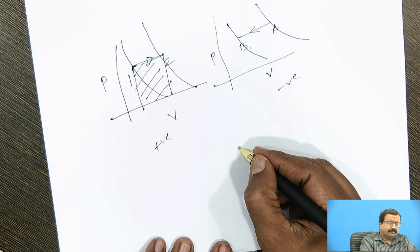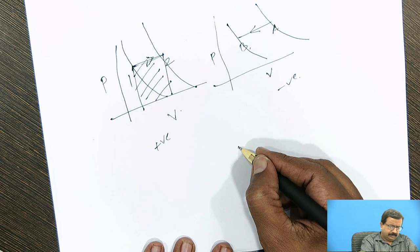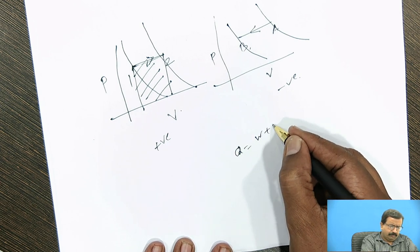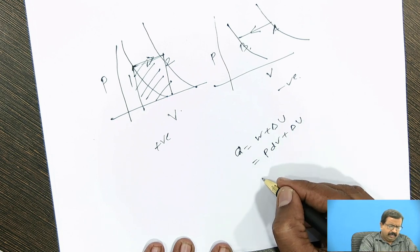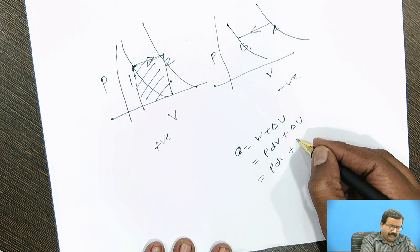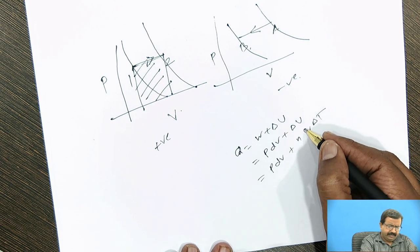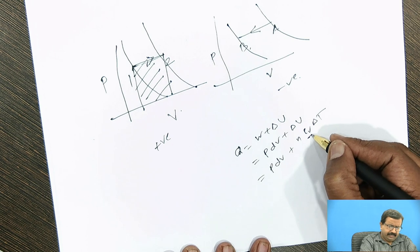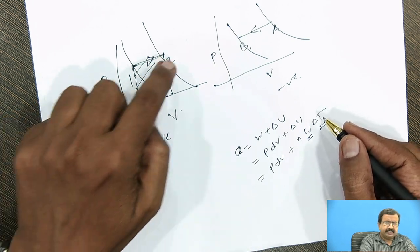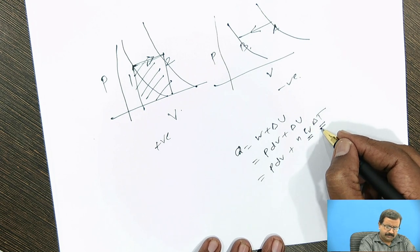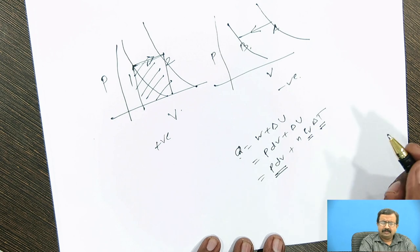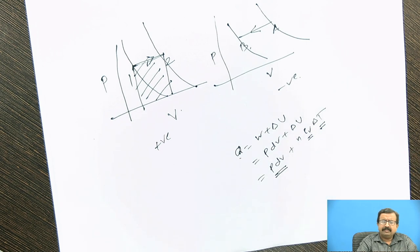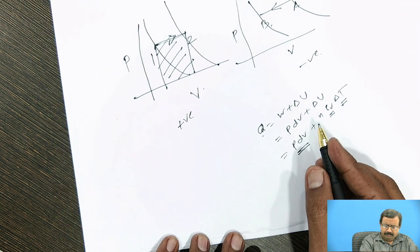Now if I apply the first law, heat supplied Q equals W plus delta U, and W is P dV plus delta U. And you know that P dV plus delta U is always equal to N Cv delta T. So Cv is positive, delta T—if there is an increase in temperature it is positive. So if I supply the heat and get the work, what will happen? You have to mention what happens to my delta U.